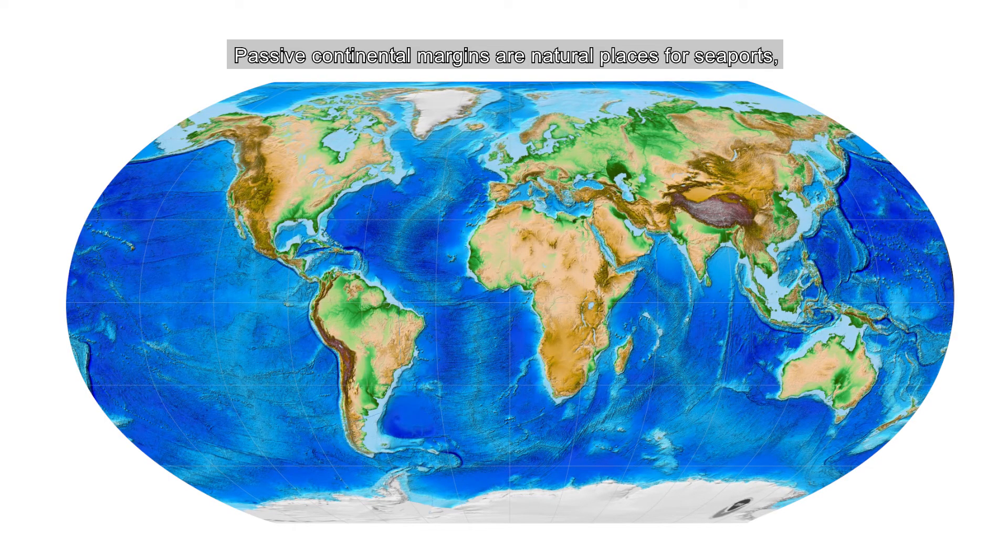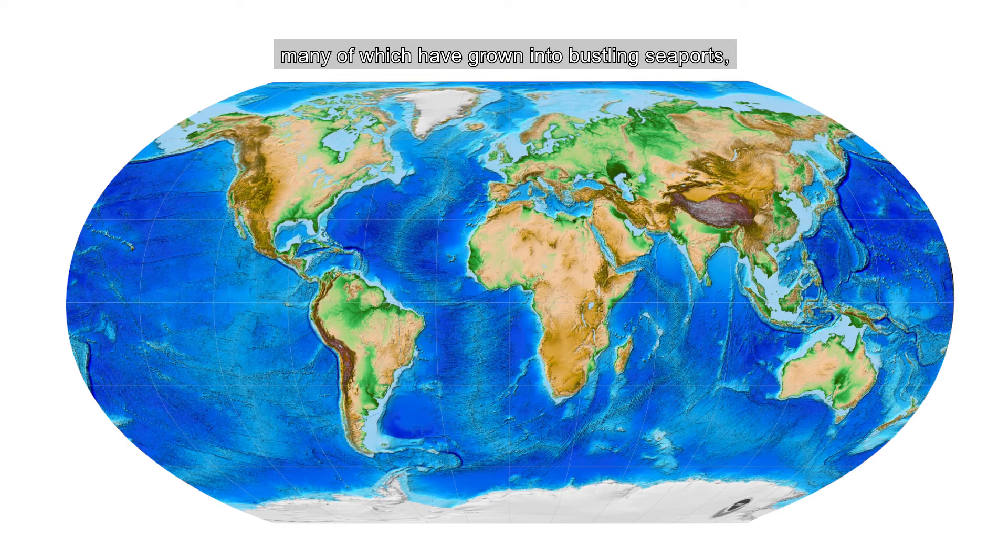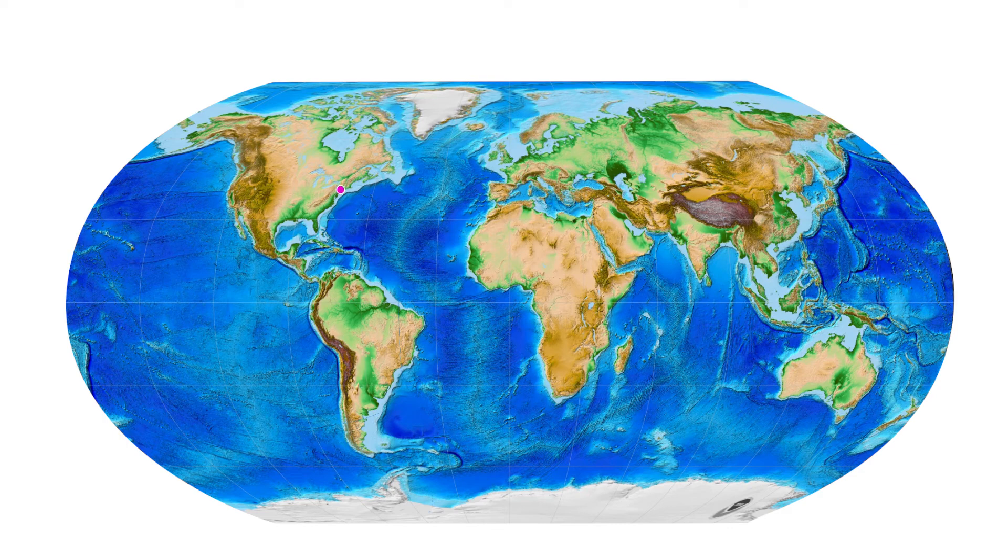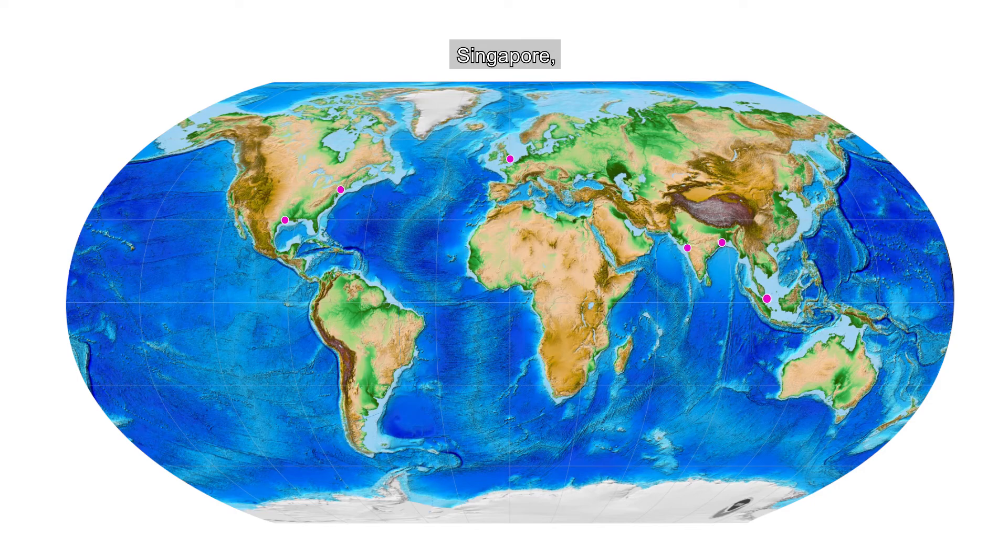Passive continental margins are natural places for seaports, many of which have grown into bustling seaports, like New York City, Houston, London, Bombay, Calcutta, Singapore, Hong Kong, Shanghai.